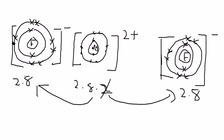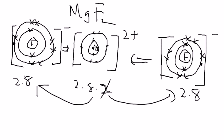So your diagram is now complete — draw everything close together. That's all for this lesson on the ionic bonding for magnesium fluoride.